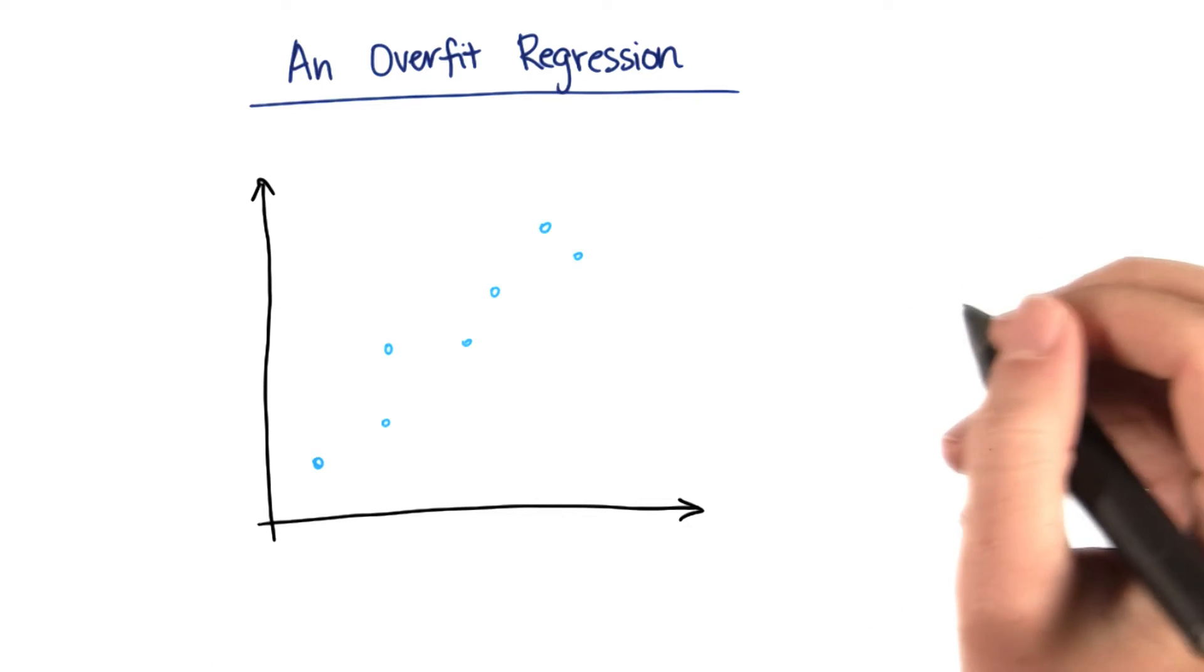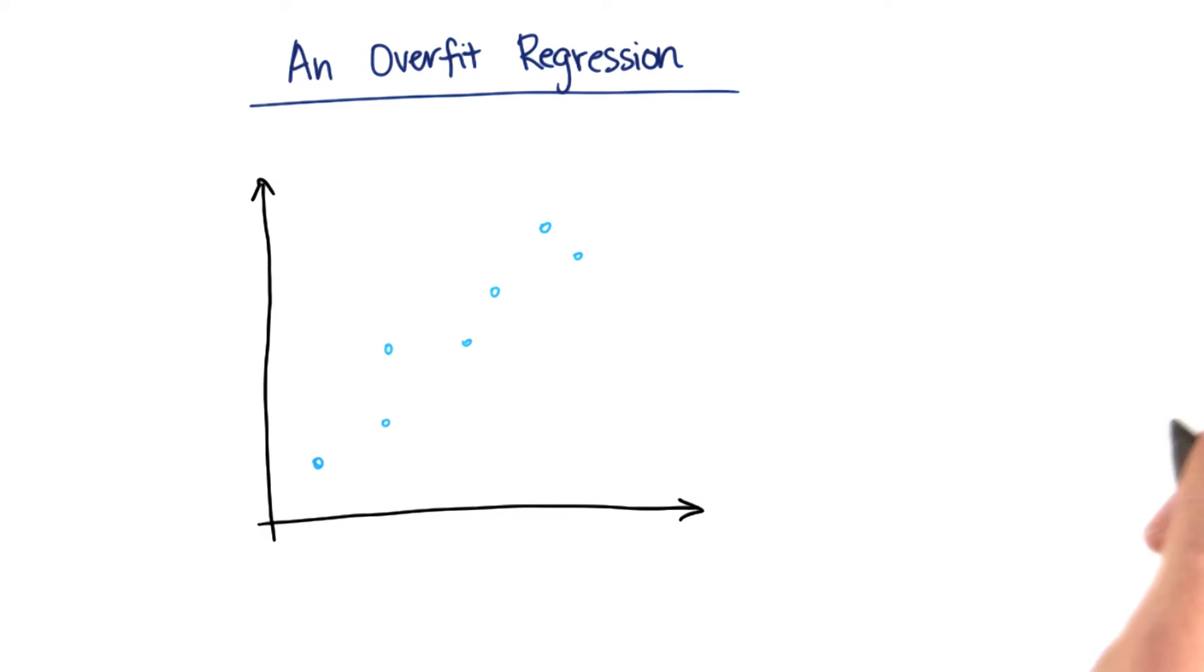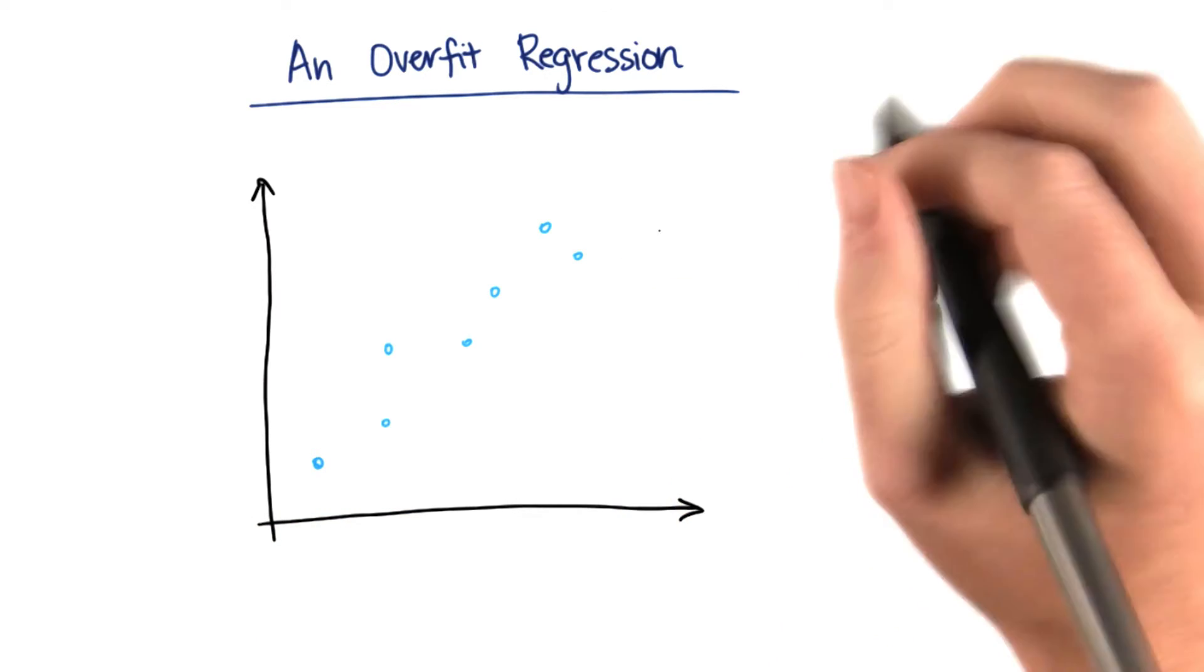So let me just show you concretely what a regression looks like when it's overfitting, so you know exactly why it's so bad. Suppose that this is my input data.